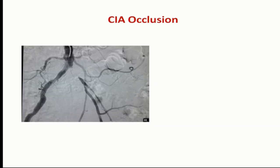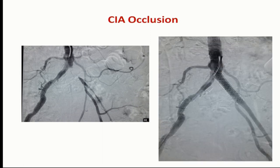Coming to the external iliac artery — triphasic waveform. This DSA image is a clinical picture we treated: the left CIA cannot be seen from origin. There is bifurcation of the abdominal aorta into common iliac arteries, but the left iliac artery is not seen. The patient presented with PAD — peripheral artery disease — sometimes presenting with gangrene. We advise seeing the patient clinically before going to imaging. This patient had complete occlusion with gangrene in the foot. Instead of advising amputation, we salvaged the limb by stenting, restoring blood flow — a daycare procedure under local anesthesia only.